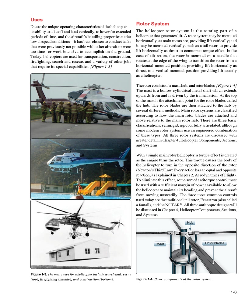The rotor consists of a mast, hub, and rotor blades. The mast is a hollow cylindrical metal shaft which extends upwards from and is driven by the transmission. At the top of the mast is the attachment point for the rotor blades, called the hub. The rotor blades are then attached to the hub by several different methods. Main rotor systems are classified according to how the main rotor blades are attached and move relative to the main rotor hub.